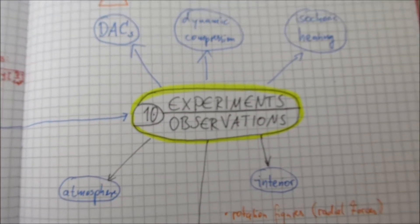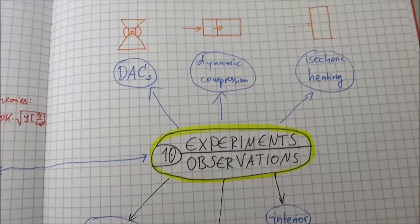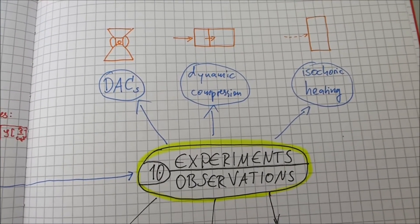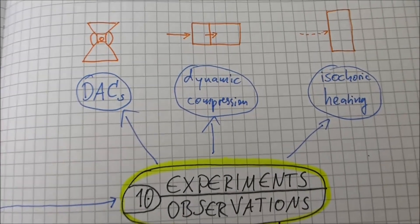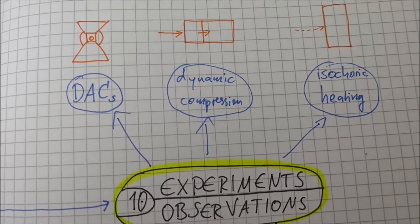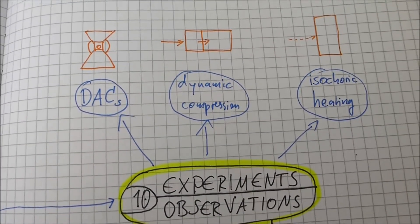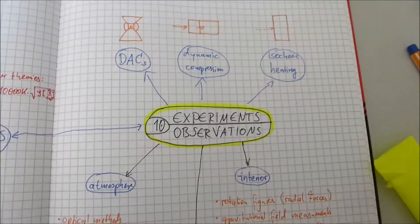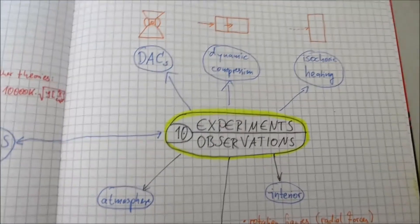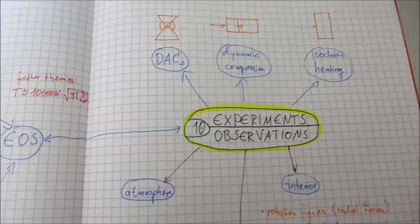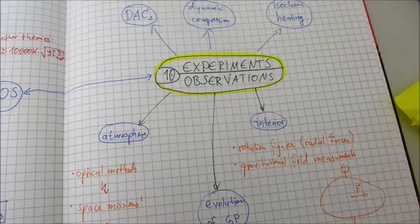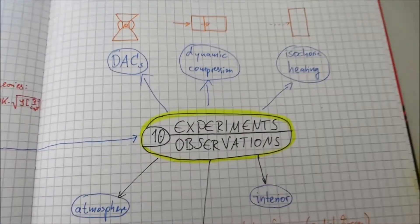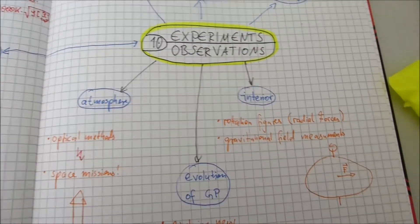So let us start with experiments. Because about experiments we did talk in the lecture several times. I think I should not explain what I mean with this. So diamond anvil cells, dynamic compression, isochoric heating. We talked about this in the lecture several times. But yes, with this we can think we can find out something about warm dense matter. And warm dense matter is in the center of such planets. So it's maybe useful.